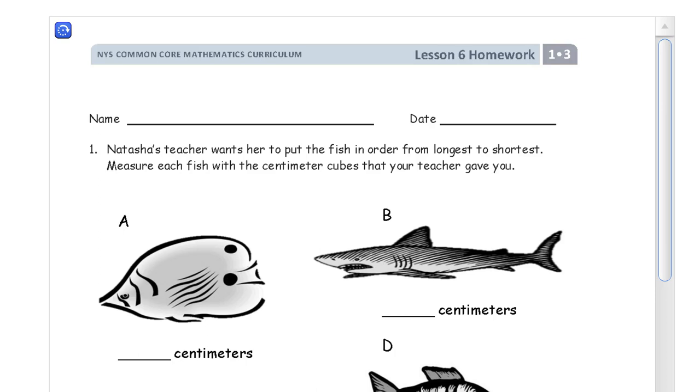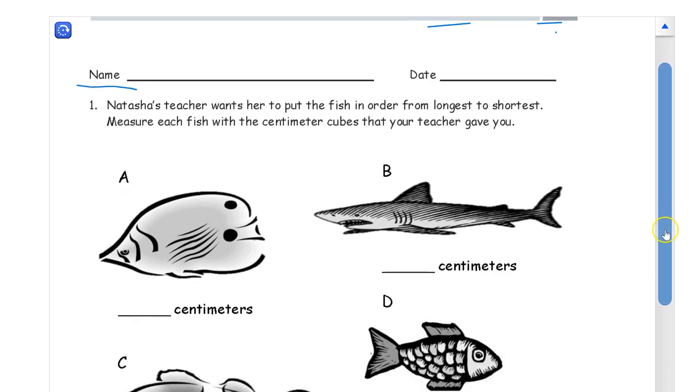Welcome to the homework for lesson 6. This is module 3 of grade 1. Get your name on here first, don't forget it. You want to get credit for your homework. Natasha's teacher wants her to put the fish in order from longest to shortest. Measure each fish with the centimeter cubes your teacher gave you.